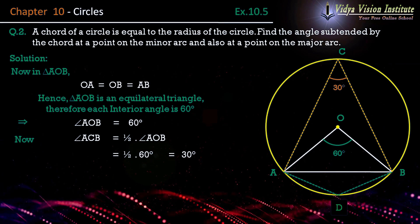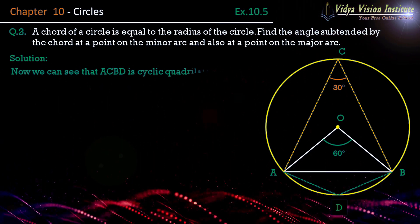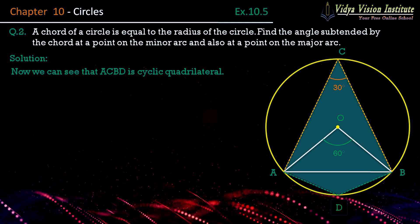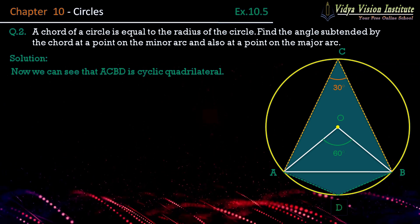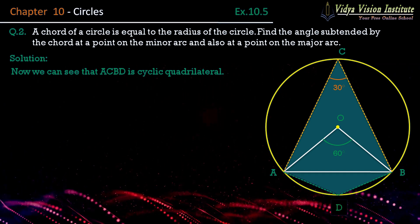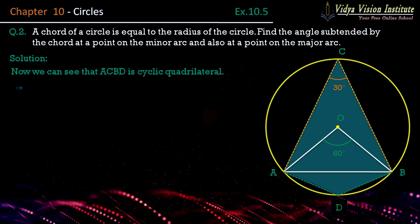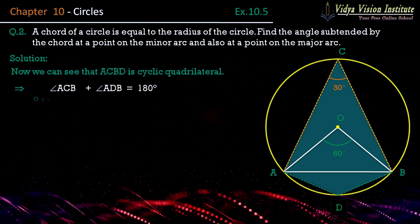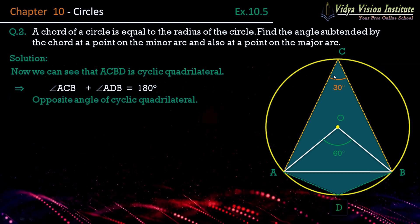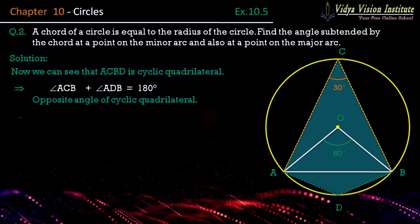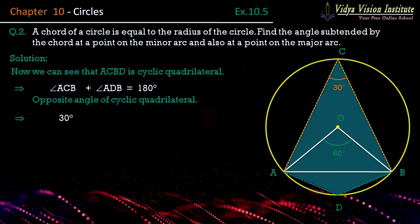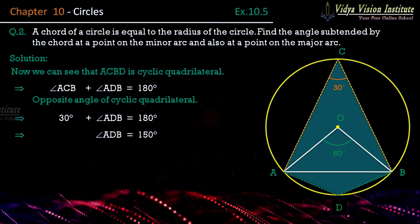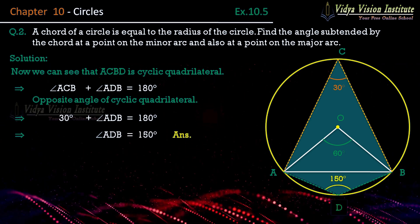Hum dekh sakte hain ki ACDB — that is ACDB — ek cyclic quadrilateral hoga. Aur jaisa ki hum jante hain cyclic quadrilateral ki ek property hoti hai that the sum of opposite interior angles is 180 degrees. Therefore angle ACB plus angle ADB is equal to 180 degrees, because both are opposite angles of a cyclic quadrilateral. Therefore 30 degrees plus angle ADB is equal to 180 degrees, hence angle ADB is equal to 150 degrees. Yehi humara answer ho jayega.